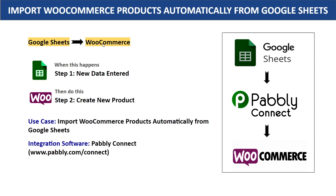Hello everyone. In this video, we will learn how to import WooCommerce products automatically from Google Sheets. Imagine this: you are using Google Sheets to build a database of your products. Your idea is that once you enter fields like product name, price, and image, a product must be created in WooCommerce.